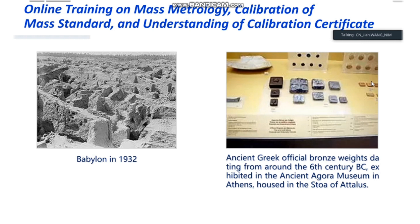Together with length and time, mass was probably one of the first physical quantities that people attempted to measure. For the purposes of classical mechanics, the modern term 'mass' is not yet 300 years old. Before this, the term used — as indeed is still the case for certain quantities — was 'weight.'